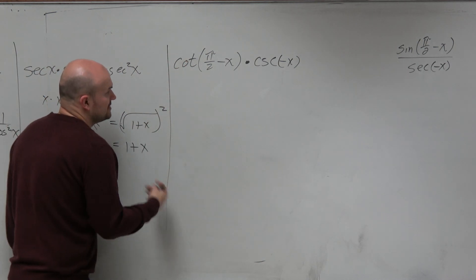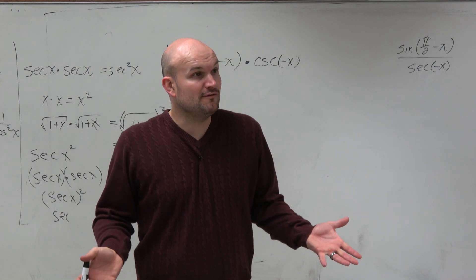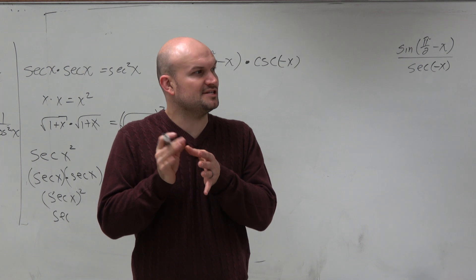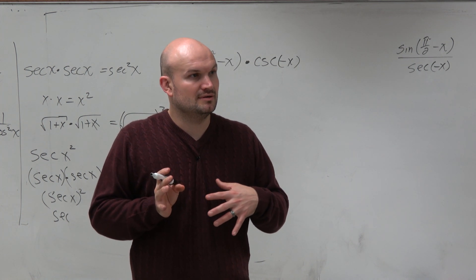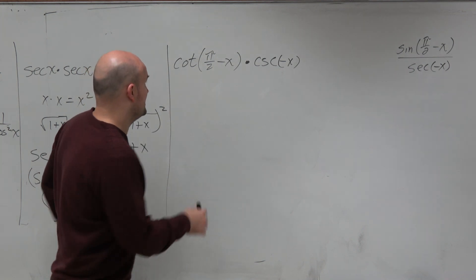So guys, these problems can really be broken down into how well do we just know the co-function identities. Remember, think about cotangent. Cotangent is just like what other graph? Tangent, right? So again, that's the idea of the co-function identities.